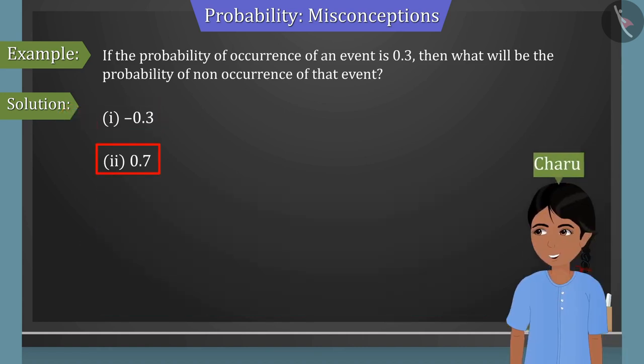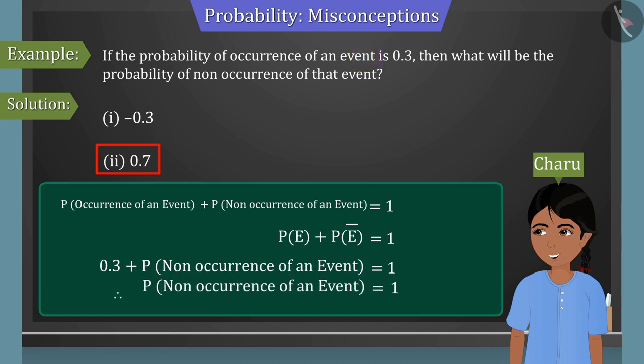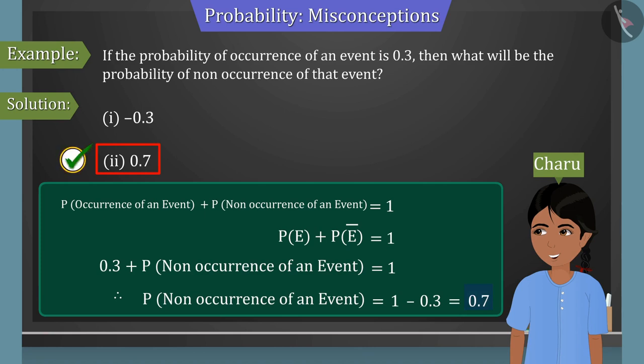Let us now observe how Charu solved this question. According to Charu, the sum of the probabilities of occurrence and non-occurrence of an event is 1. In this question, we are given the probability of occurrence of an event 0.3. Therefore, the probability of the event not occurring is 0.7. Charu's answer is correct.